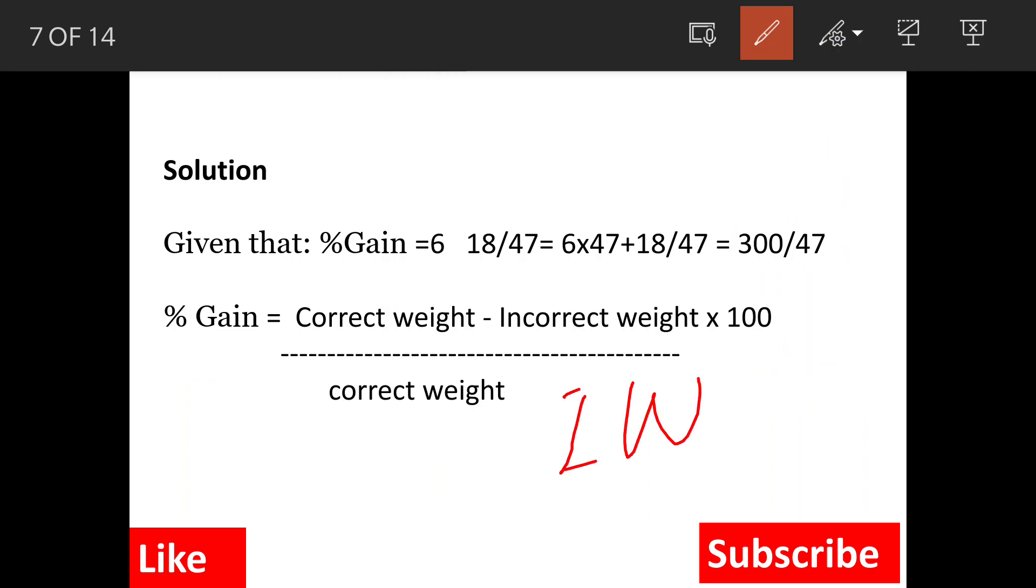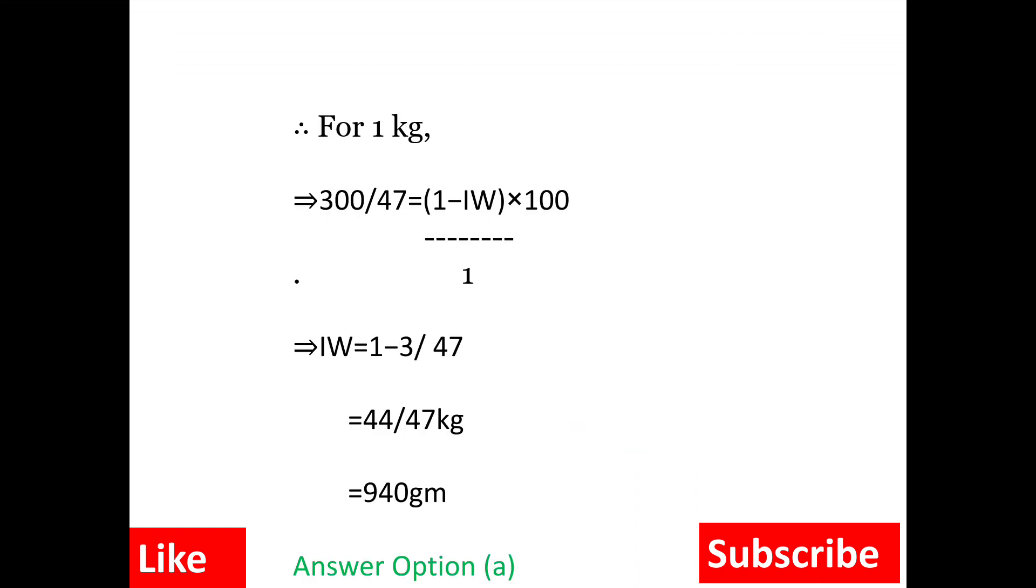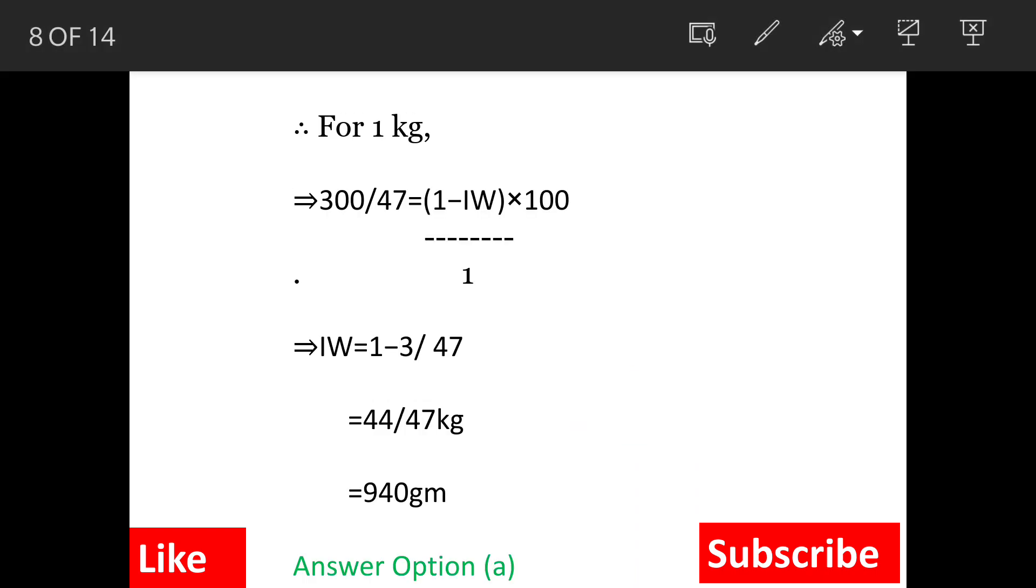So let us calculate this for 1 kg. This is what the question is. Correct weight is 1 kg, so his profit is 300 divided by 47. Now correct weight is 1 kg minus incorrect weight divided by correct weight, that is 1, into 100. So this is the equation we get. And when you solve this, you will get the value of incorrect weight is 44 divided by 47 kg, which is equivalent to 940 grams. So answer is option A.